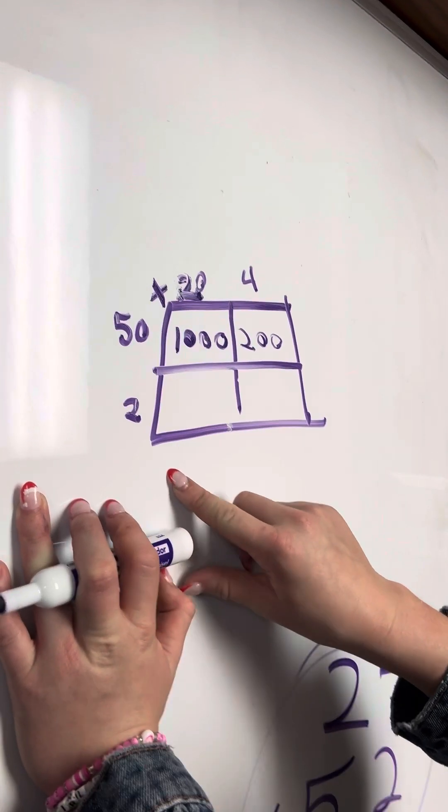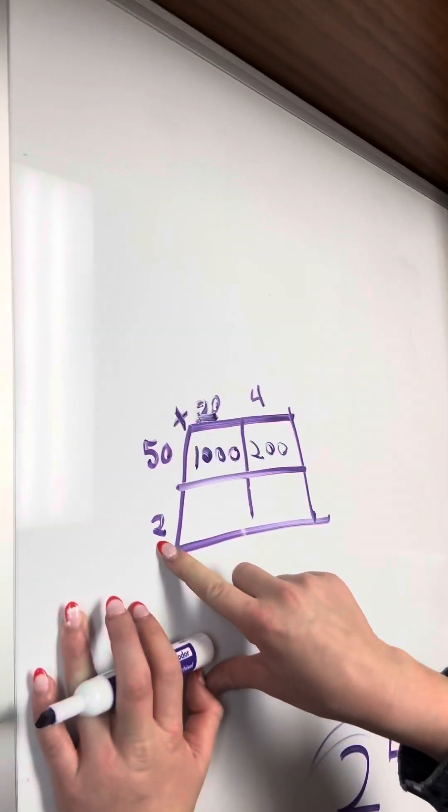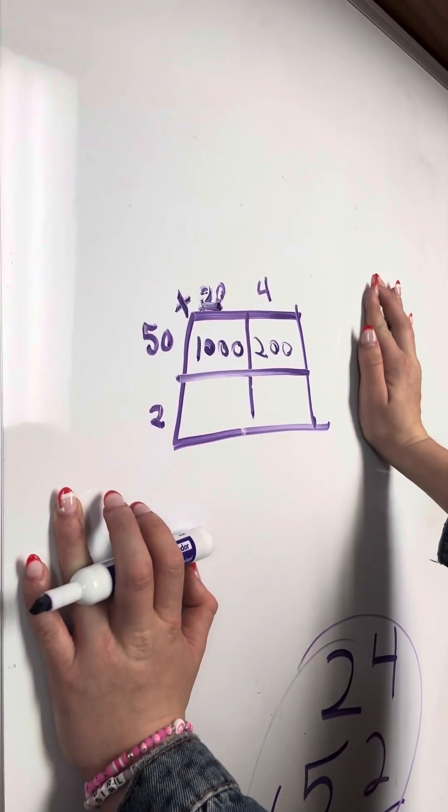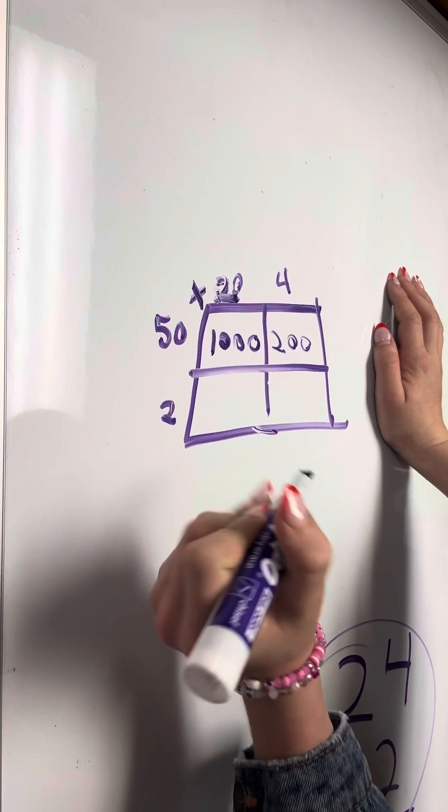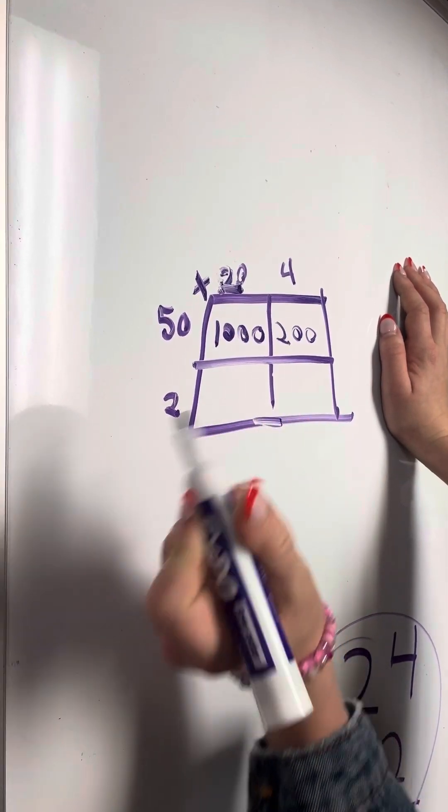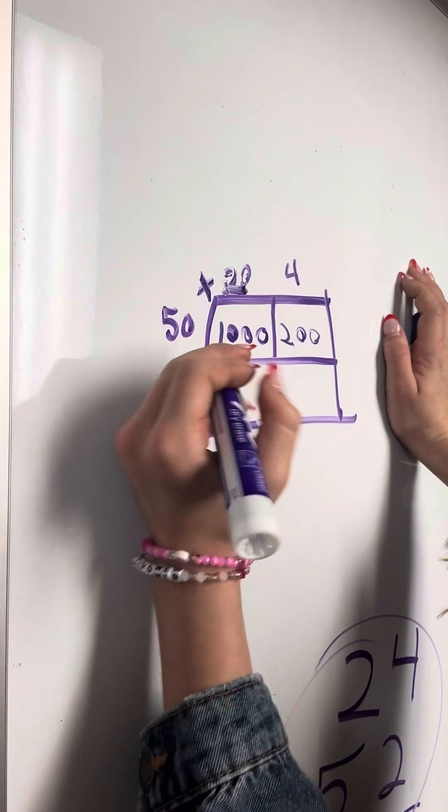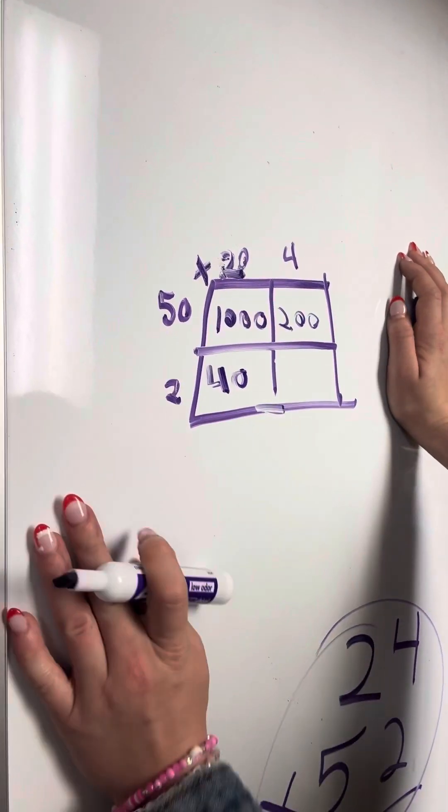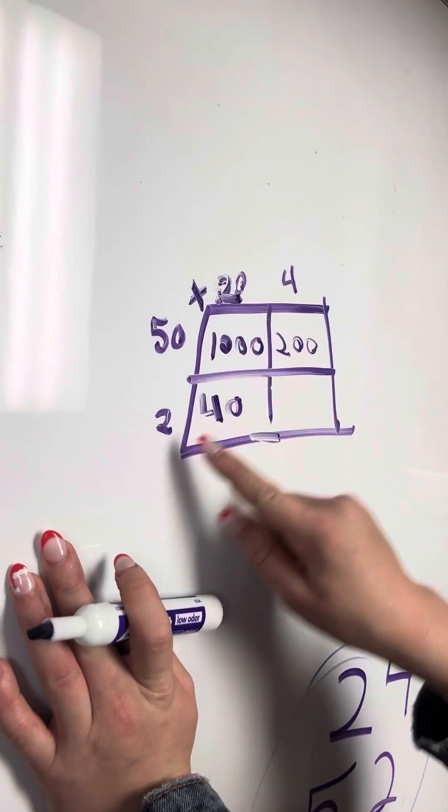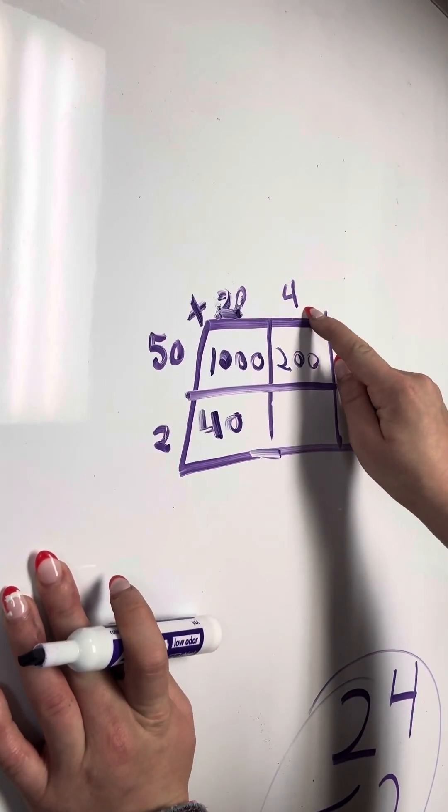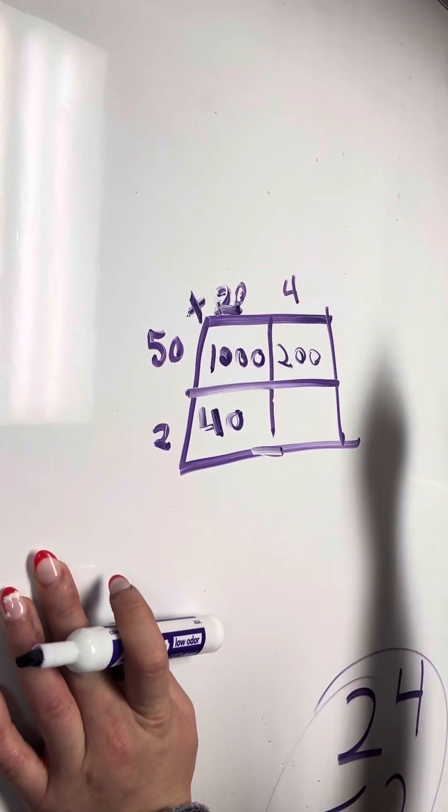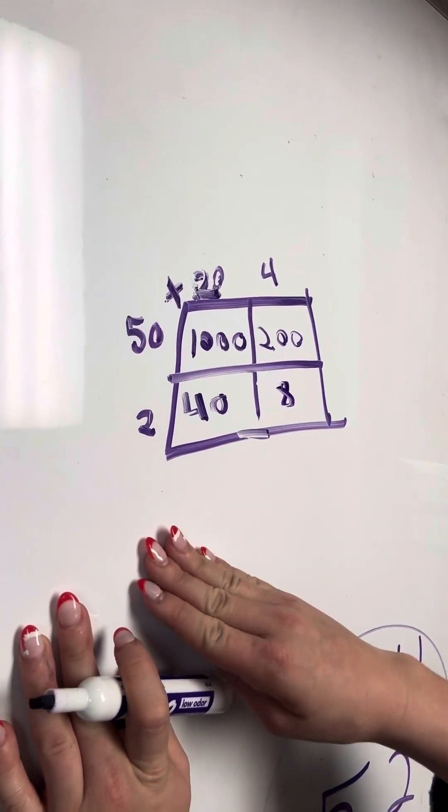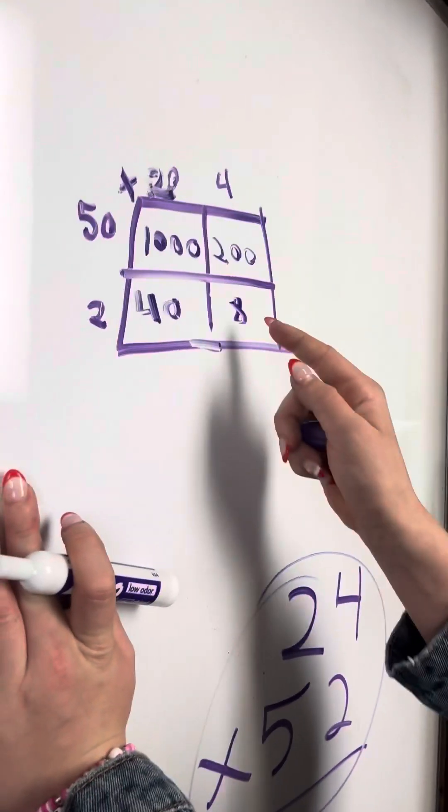Now we're going to come over here and we're going to do 2 times 2. I know that that is 4, so I'm going to put a 4 here and add the zero from here. Now we're going to do 2 times 4, so that equals 8. So now we have all of our boxes turned in.